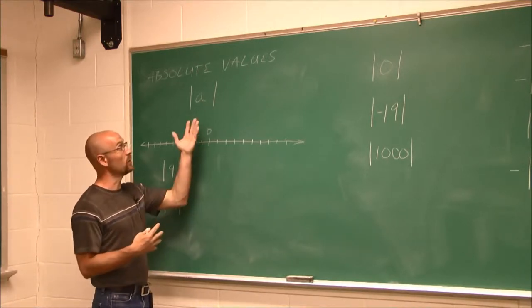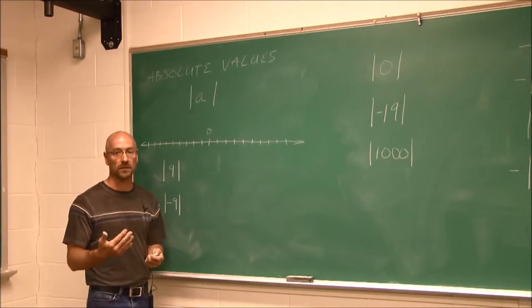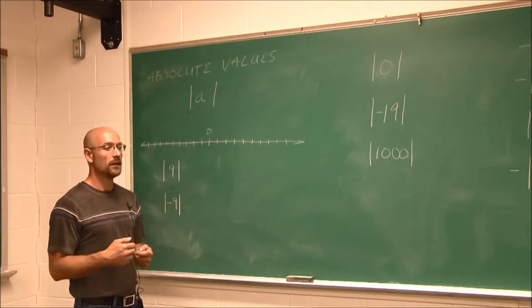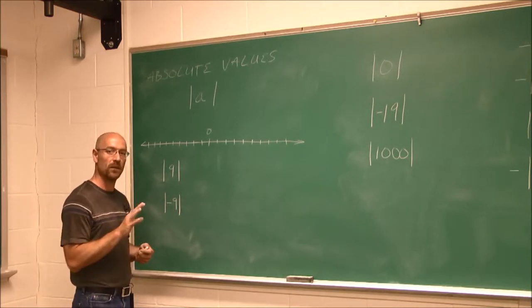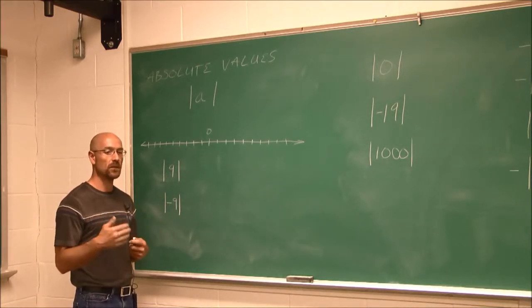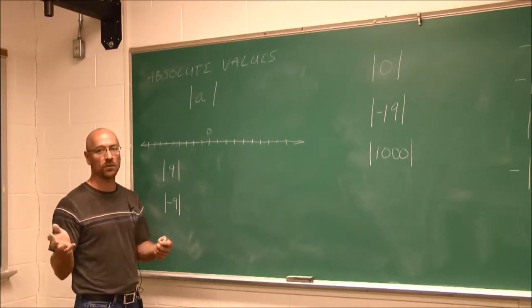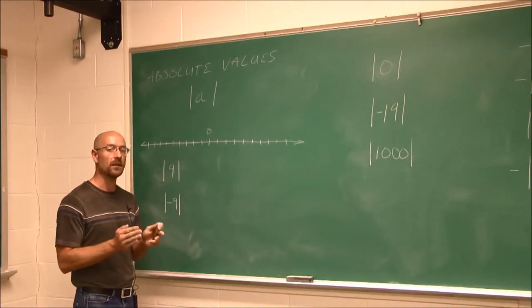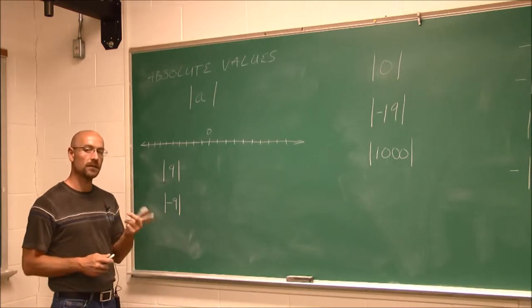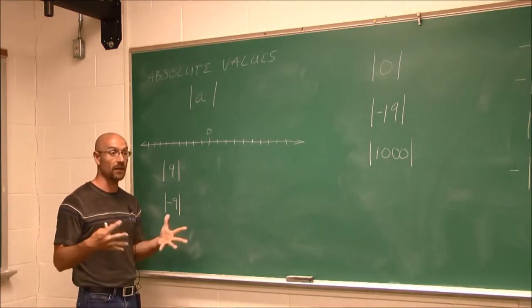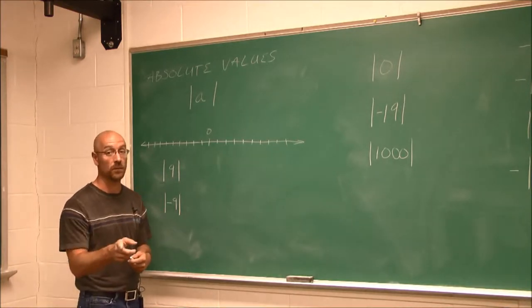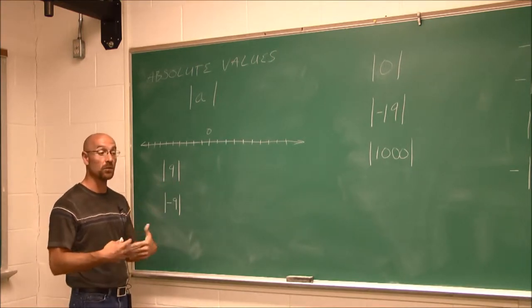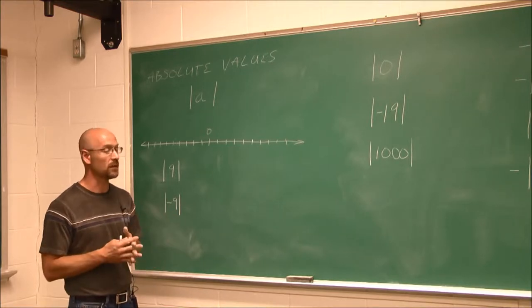One example of where we use absolute values is when we talk about distances. If you were asking someone for directions, they're going to tell you how many miles in a certain direction — they qualify the direction separately from the distance. So if someone asks how far is Kingsford from Escanaba, someone might say 55 miles. They don't tell you any direction, because it's an absolute value. Distance is always an absolute value. You'd never say negative 55 miles. When it comes to absolute value, the result will always be positive, because we're asking for distance.